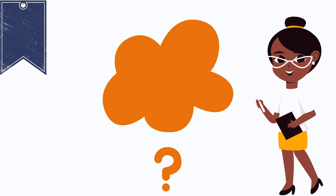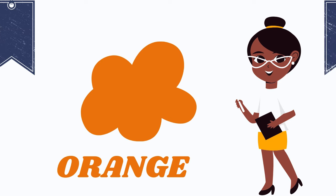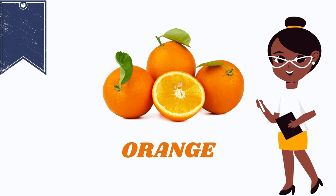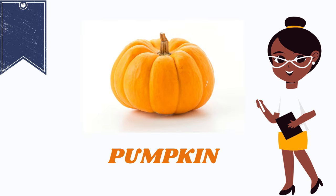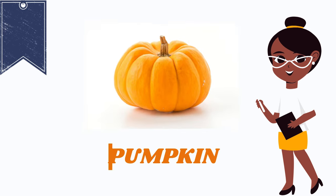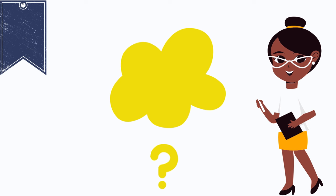Which color is this? Do you know? Yes, this is the color orange. It spells O-R-A-N-G-E. Orange is an orange, orange is a pumpkin, orange is a t-shirt.